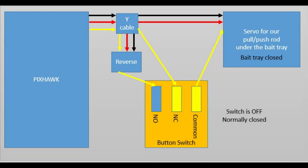And when you then sit behind the boat and push that button, the normally open and common port gets connected and the bait tray opens.